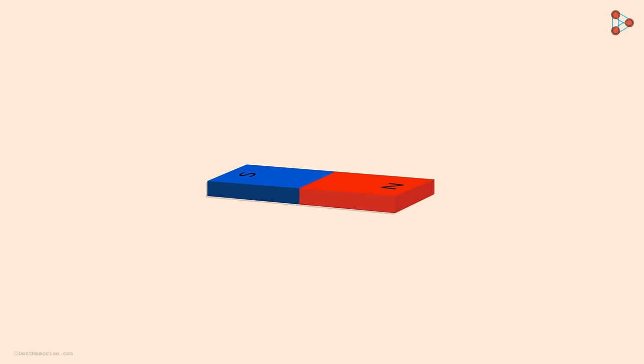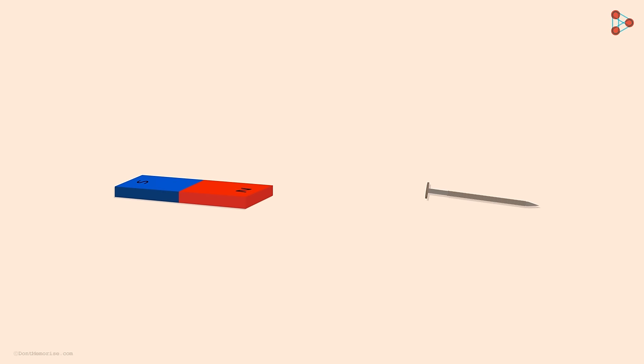You must have seen a magnet with this shape before. It's called a bar magnet. It looks like a chocolate bar. What happens if we bring it near an iron nail?